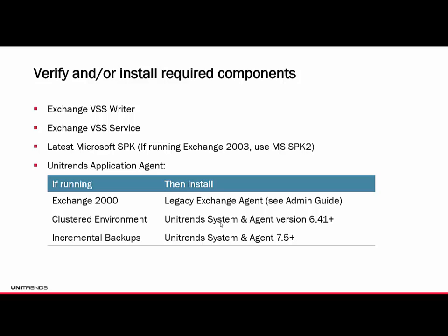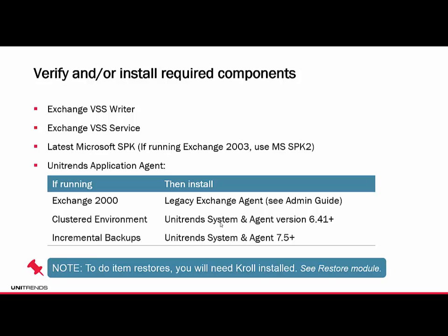We really encourage you to run the newest version on your Unitrends appliance and the newest agent version — currently up to version 9. The versions mentioned are the minimums they'll run on. To do item-level restores, make sure you have Kroll OnTrack. It allows you to browse into the recovery point mounted off the appliance, point to the EDB, and bring back itemized content — export PSTs, import PSTs, and retrieve any content from a user's inbox, calendar entries, contacts, notes, tasks, and inbox content. Check the licensing and restore module for Exchange for more information on Kroll OnTrack.